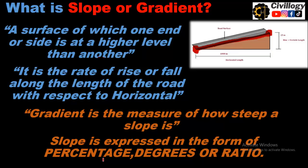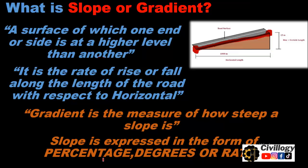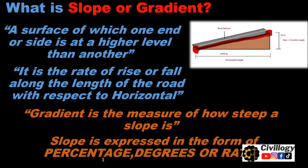So let's discuss the first case. In first case, the rise is given which is 500 millimeters, the run is also given which is 10 meters, and we have to find slope.